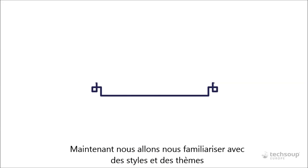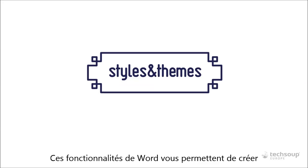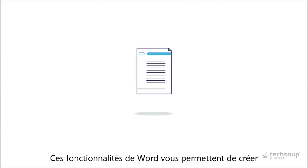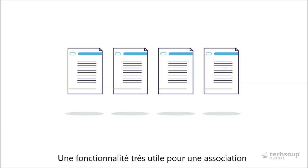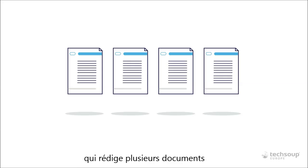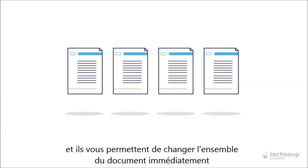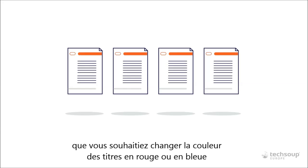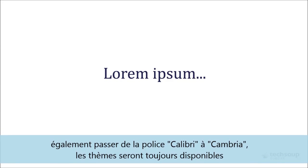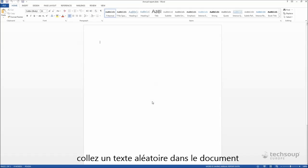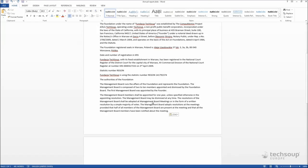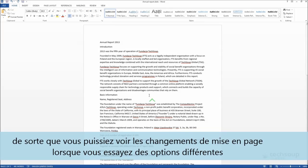Let's get acquainted with styles and themes. These Word features allow you to create customized documents that can be repeated multiple times — a very useful feature for a nonprofit that produces numerous texts. Themes do the layout for you and allow you to change the whole document at once. Let's make a theme template — we'll call it an annual report template. Paste a random text in the document so that you can see how the layout changes as you try different options.